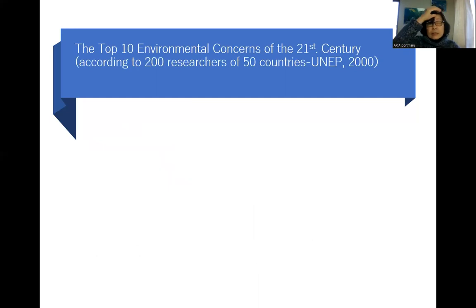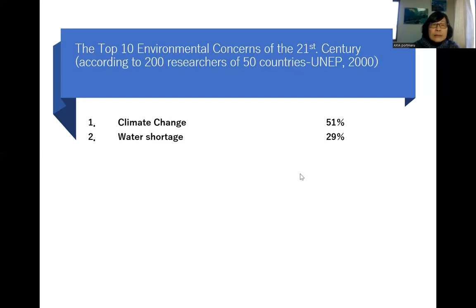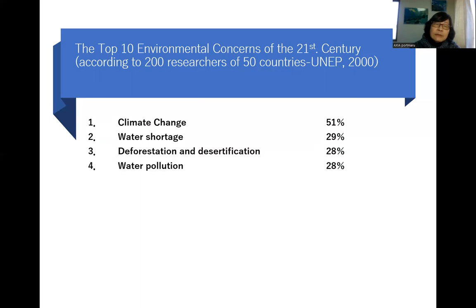Now let's see the top 10 environmental concerns of the 21st century according to 200 researchers from 50 countries — research made by UNEP, the United Nations Environment Programme, in 2000. First was climate change at 51%. Second, water shortage at 29%. Third, deforestation and desertification at 28%. Fourth, water pollution at 28% — so both water shortage and water pollution are serious concerns. Fifth, lack of administration at 27%.